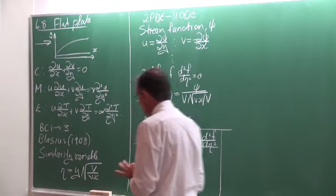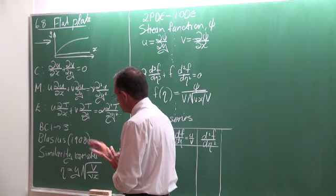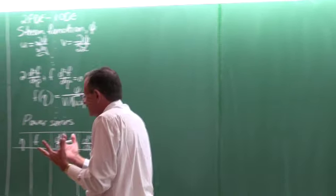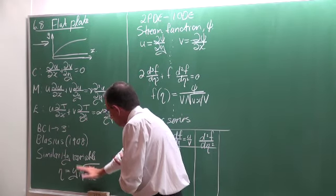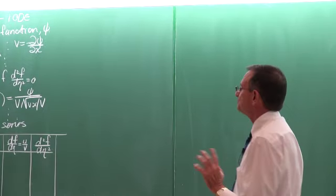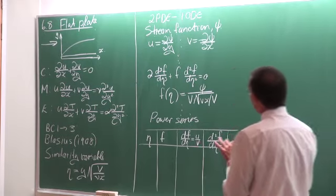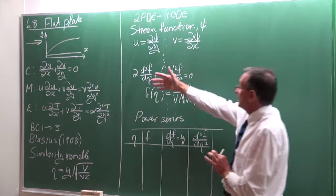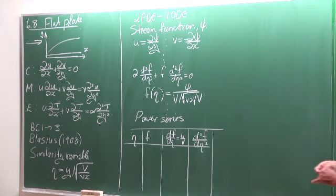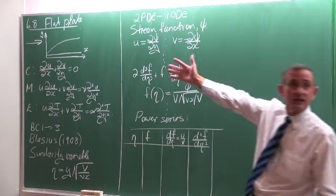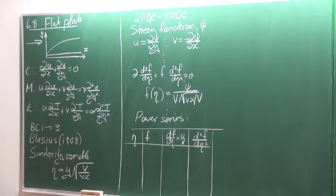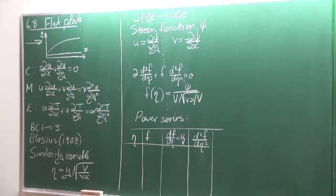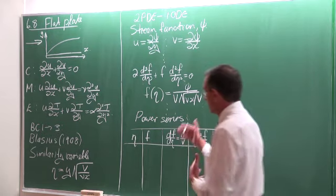In the time of Prandtl, a lot of work was done, and Blasius was one of his first PhD students. Prandtl had an idea of how the solutions should look, but couldn't get it out. Blasius was the one who got it out by defining a similarity variable eta. He could then take the first two partial differential equations and, together with the stream functions, get one ordinary differential equation. He solved it with a power series — not easy, a lot of work. Another approach today is solving it with the third-order Runge-Kutta method very easily.